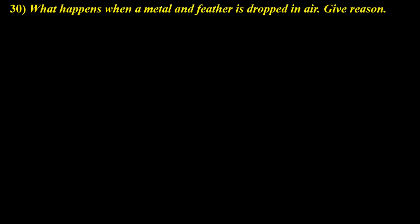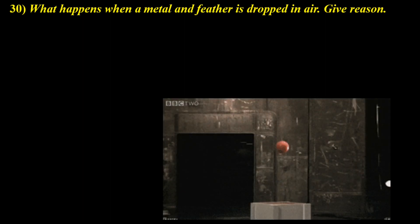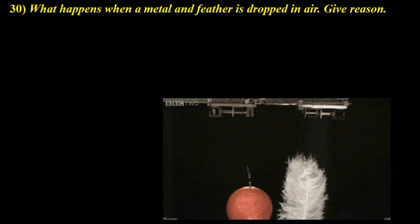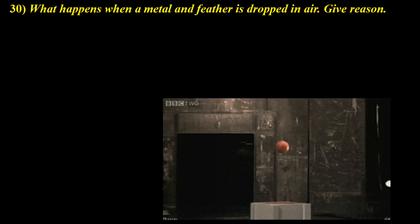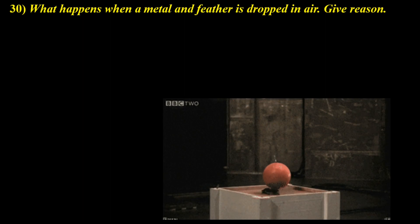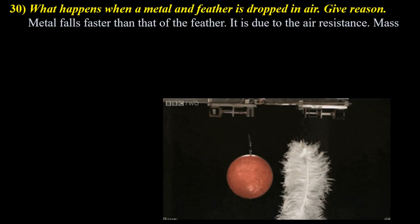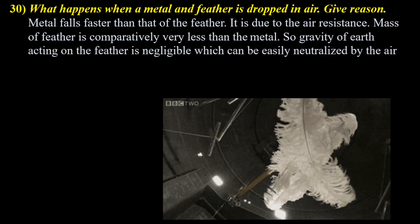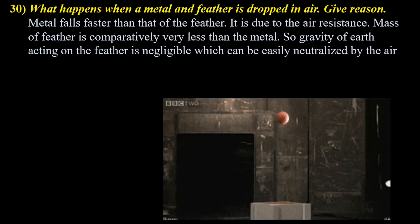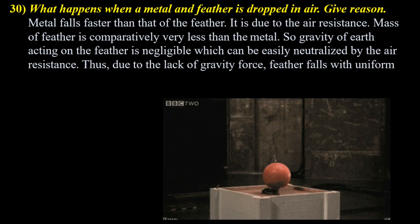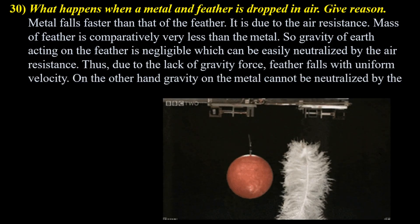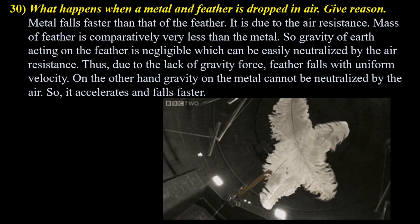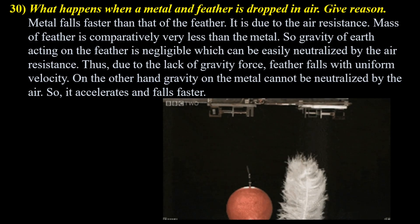What happens when a metal ball and a feather are dropped in air? A metal ball and a feather are dropped together, but the metal ball falls faster than the feather. Air resistance acting on the feather makes it fall later than the metal ball. Metal falls faster than the feather due to air resistance. Mass of the feather is comparatively very less than the metal, so gravity on the feather is negligible and can be easily neutralized by air resistance. Thus, due to the lack of net gravity force, the feather falls with uniform velocity. On the other hand, gravity on the metal cannot be neutralized by air resistance, so it accelerates and falls faster.